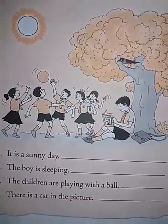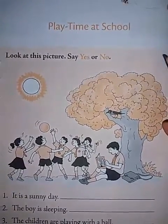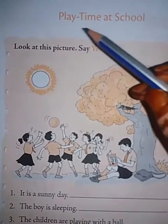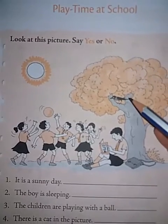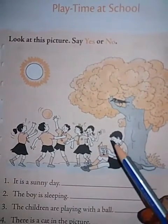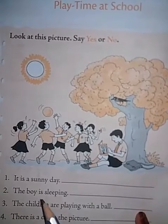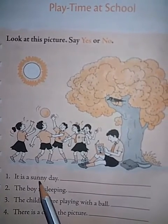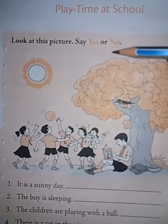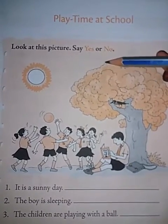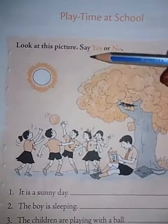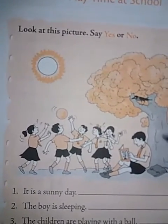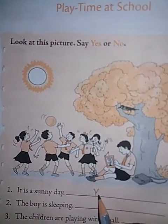Page number four. Playtime at school. Look at this picture and say yes or no. You have to see this picture and say yes or no. Answer these questions now. First one: it is a sunny day. Is it a sunny day or rainy day, children? Yes, it is a sunny day. Because here is the sun and the sun shines, so it is a sunny day. Yes or no? Yes. Y-E-S. Yes. Very good.